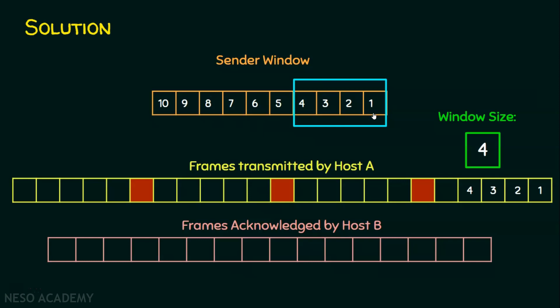The receiver sends an acknowledgement for frame 1. The sender then transmits the next available frame in the buffer, which is frame 5. The sliding window slides so the current window holds frames 2 to 5, since frame 1 is already acknowledged. Frames 2, 3, 4, and 5 are transmitted and waiting for acknowledgement, while frames 6 through 10 are not yet transmitted.